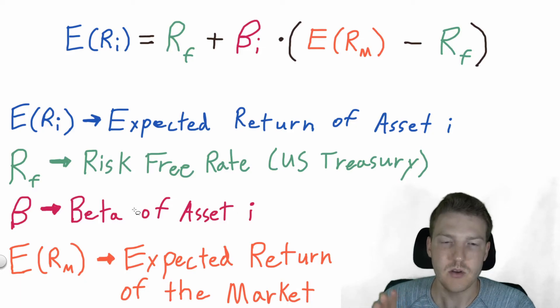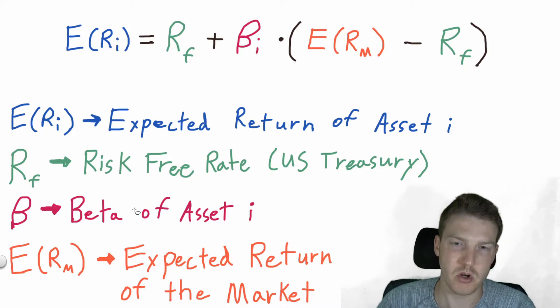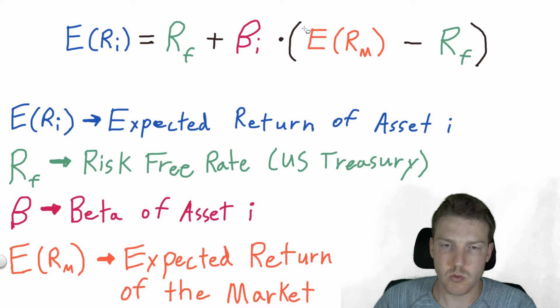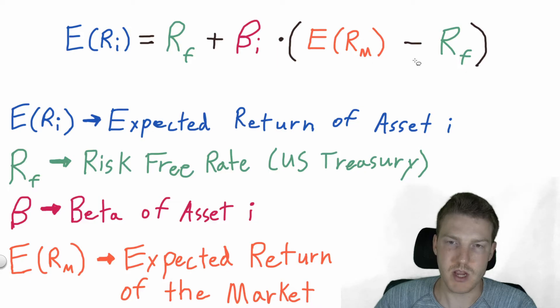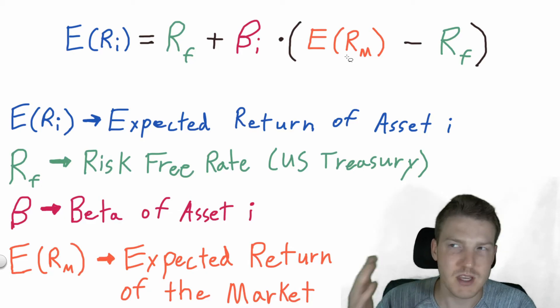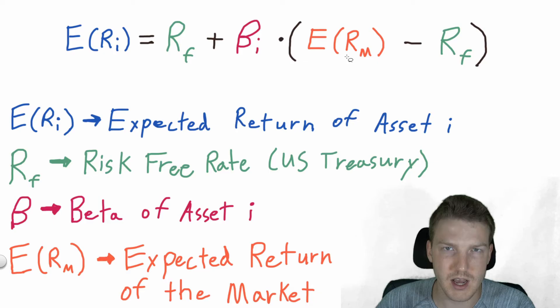I'm going to break that down in more detail soon. So this is just how this asset moves with the market. And then the last component of this is we're multiplying the expected return of the market minus the risk-free rate. So the expected return of the market is just what we expect the overall market to return in a given year. Think of the S&P 500. All of the stocks combined, that is the market, or all of the bonds, or whatever market you're looking at.